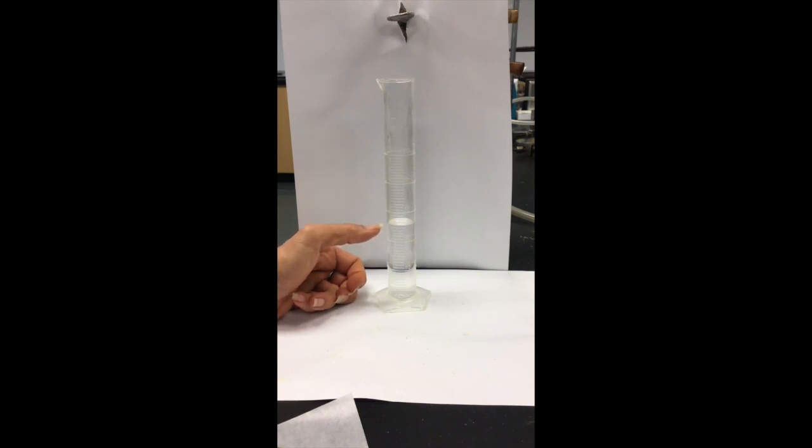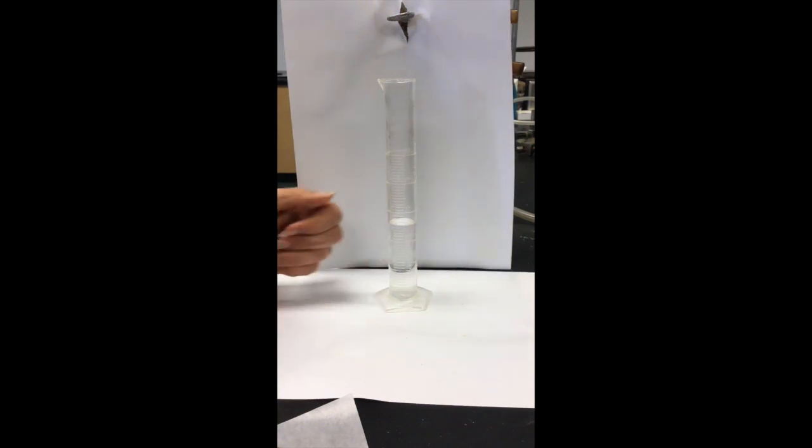What's important here is you record the exact volume. When you're reading the bottom of the meniscus of your water—that's the curvature part—you want to make sure you're looking at where the line is touching. You want to read that at eye level, so I am bending down to look at it, or I could lift it up to my eye level.